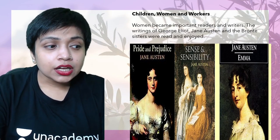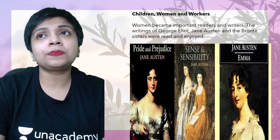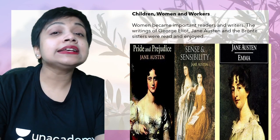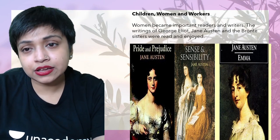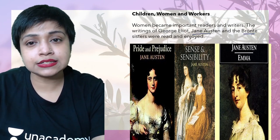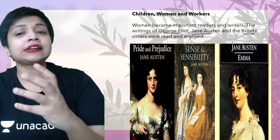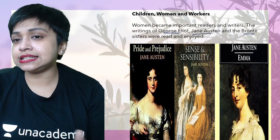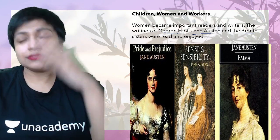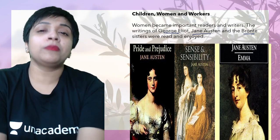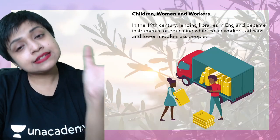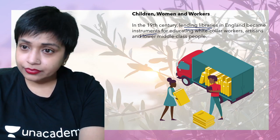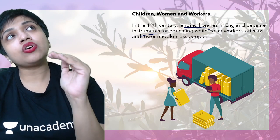Women were an ignored group in society, but during this time many women authors came up and started writing books. Notable names include Jane Austen, the Brontë sisters, and George Eliot. They wrote with women characters and women readers in mind — books like Pride and Prejudice, Sense and Sensibility, and Emma. Lending libraries also catered to the needs of poorer people who could not afford to buy books.